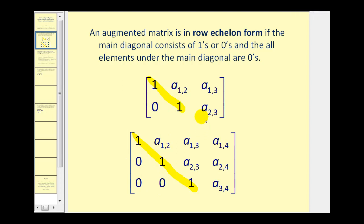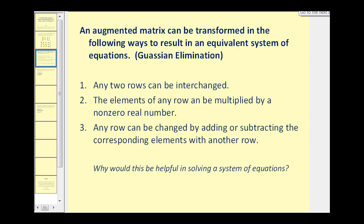Let's take a look at how we're going to transform the augmented matrix into row echelon form. What we're allowed to do is interchange two rows. We're also allowed to multiply the elements of any row by a non-zero real number, and we can also add and subtract the corresponding elements of any two rows. This process is called Gaussian elimination.